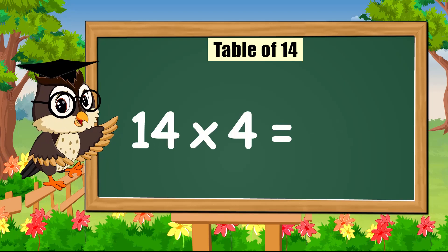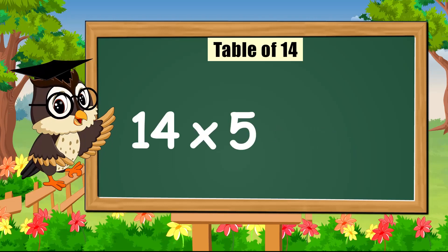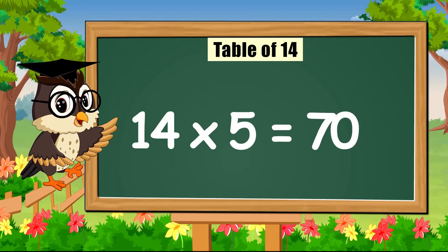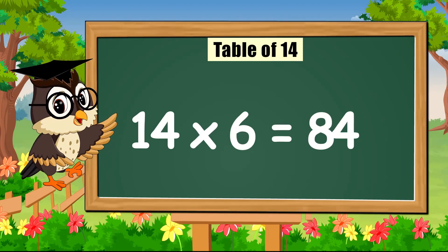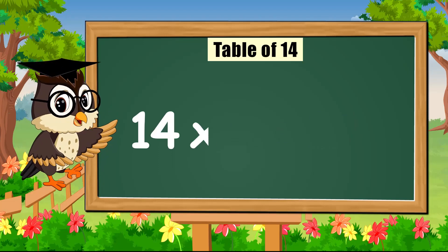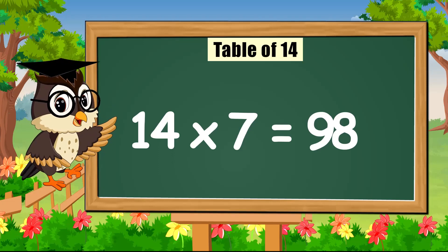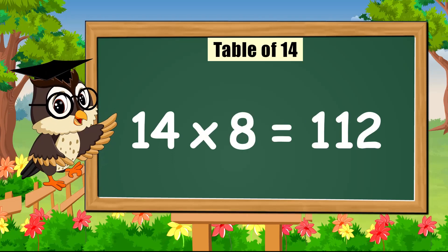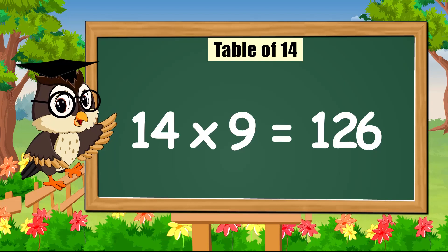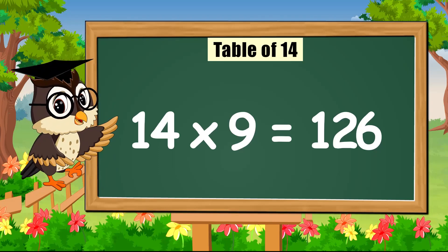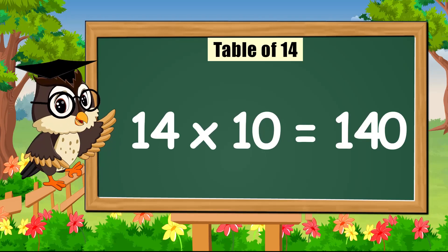Fourteen times four is fifty-six. Fourteen times five is seventy. Fourteen times six is eighty-four. Fourteen times seven is ninety-eight. Fourteen times eight is a hundred and twelve. Fourteen times nine is a hundred and twenty-six. Fourteen times ten is a hundred and forty.